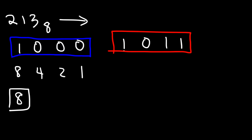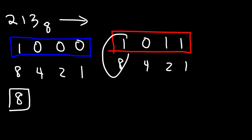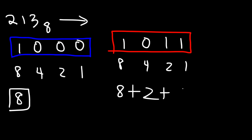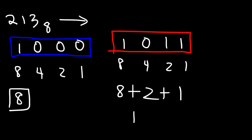Now what about 1, 0, 1, 1 as a binary number — what's the decimal equivalent? So we write the same place values: 8, 4, 2, 1. We have 1 times 8, which is 8; 4 times 0 is nothing, so we ignore that; 1 times 2 is 2; and 1 times 1 is 1. So we have 8 plus 2 plus 1, which is 11.